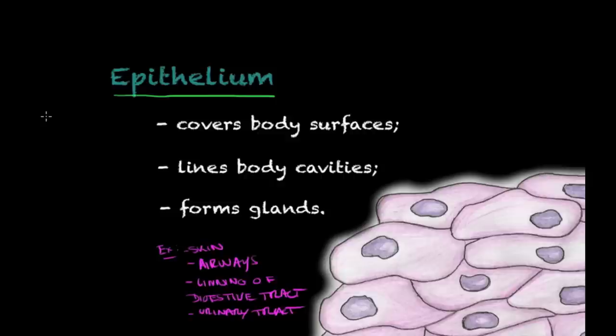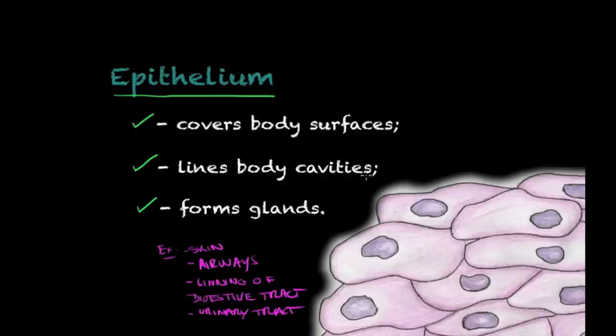Today we are talking about this tissue, the epithelium. This is one of the four basic types of tissues that you can find in the human body. If you have a question about what a tissue is, I suggest you check out the video where I give you a basic understanding of that. On this lecture on epithelium, I want to give you the basic knowledge you will need to understand what epithelium is. Epithelial cells are found covering body surfaces, lining body cavities, and forming glands.